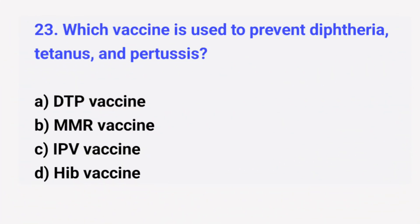Question number 23. Which vaccine is used to prevent diphtheria, tetanus, and pertussis? The right answer is option A: DTP vaccine.